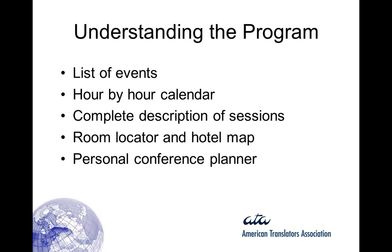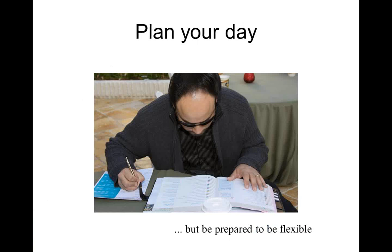The program has a list of events, an hour-by-hour calendar, and complete descriptions of the sessions — if you're unsure about a session, read the description to see if it sounds interesting. The personal conference planner lets you write out your schedule and room locations. Each area is color-coded: for example, independent contractors is yellow, German programs are blue, and so on.